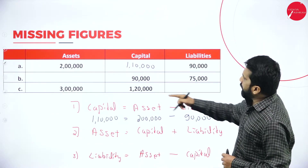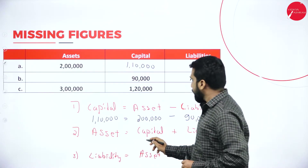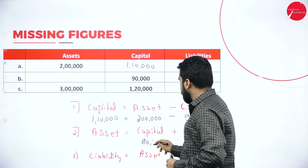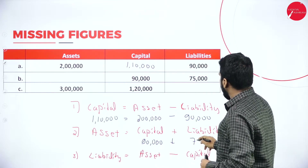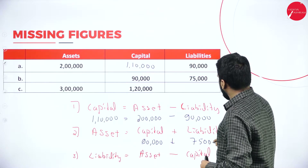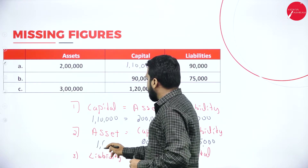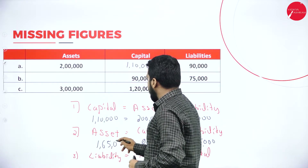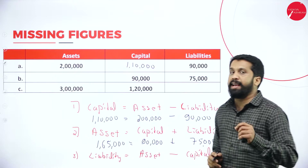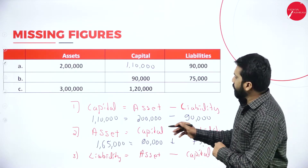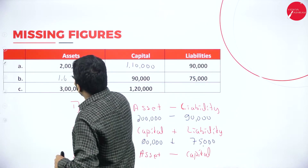Example two: you have capital and liability, and you have to find the asset. Capital is ninety thousand, liability is seventy-five thousand. So ninety thousand plus seventy-five thousand equals one lakh sixty-five thousand. Your asset is one lakh sixty-five thousand.